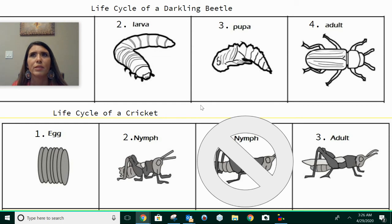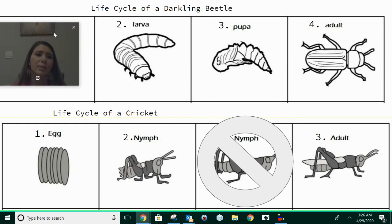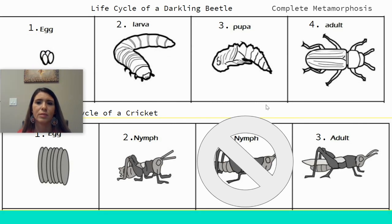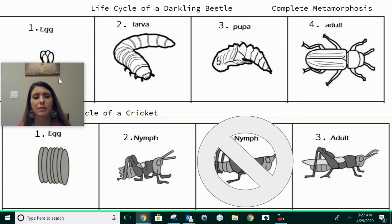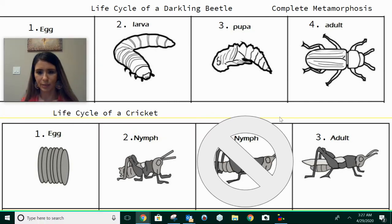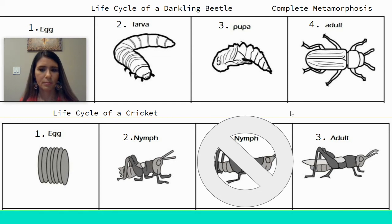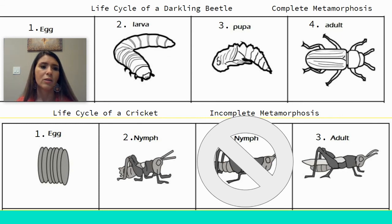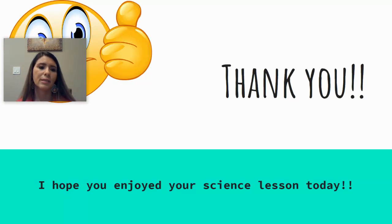What about the different types of metamorphosis? The darkling beetle went through complete metamorphosis, and the cricket went through incomplete metamorphosis. I hope you enjoyed our lesson — thanks!